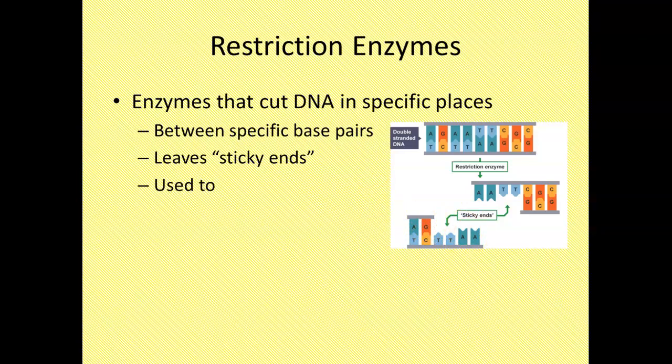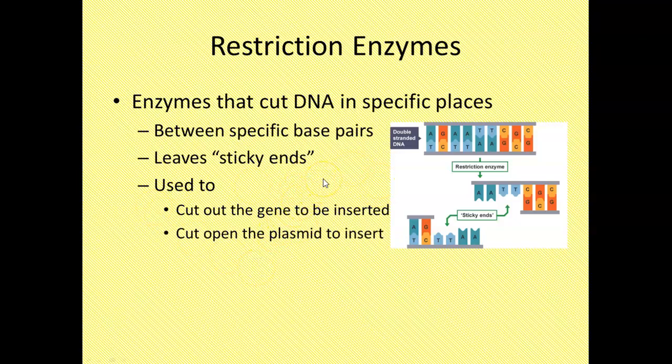What do we use restriction enzymes for? There's two things we want to do with restriction enzymes. Number one, when we find the gene that we want to insert into a different organism, we've got to chop that gene out of the existing chromosome. So we're going to use restriction enzymes. And we're going to also use it to cut open that circular piece of DNA called a plasmid. That's where we're going to insert the gene.